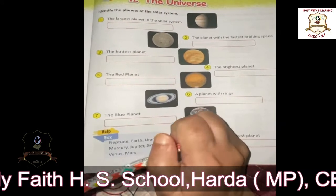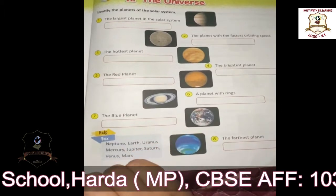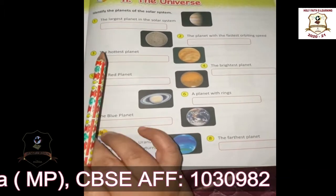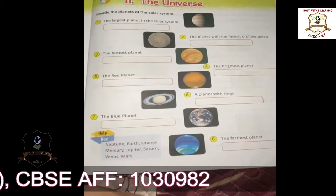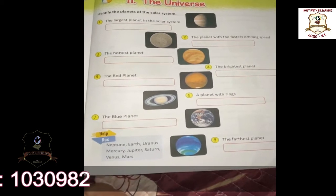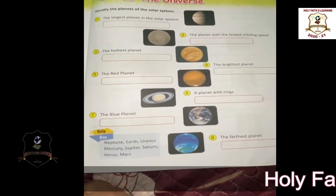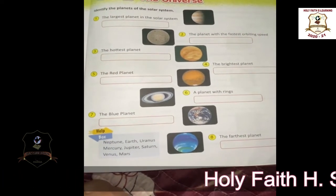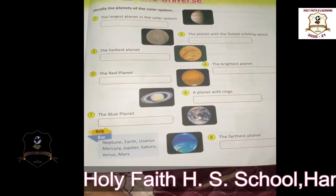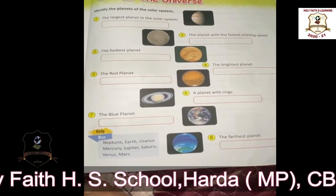Students, you have learned about planets in your EVS lesson, right? How many planets are there in our solar system? There are 8 planets in our solar system.